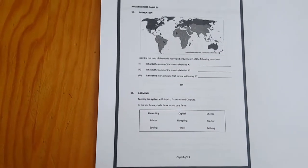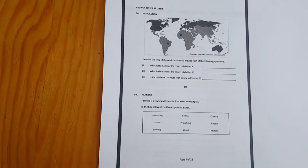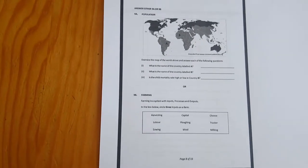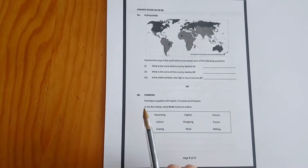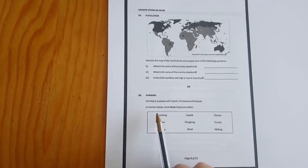Okay, so here we have a short question on farming, so primary economic activities from the 2017 Junior Cert Geography paper. It's a very simple question. Farming is a system with inputs, processes, and outputs. In the box below, circle three inputs on a farm.